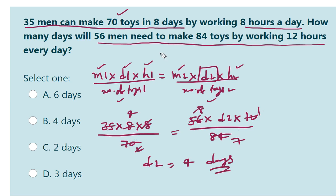56 men need 4 days to make 84 toys by working 12 hours every day. Like this, we have to find the solution for this problem.